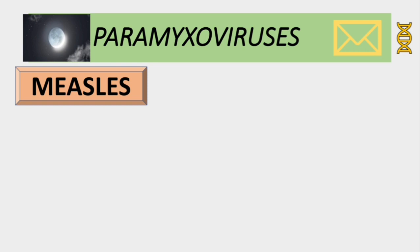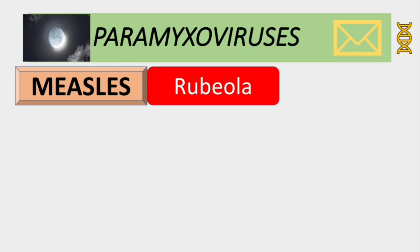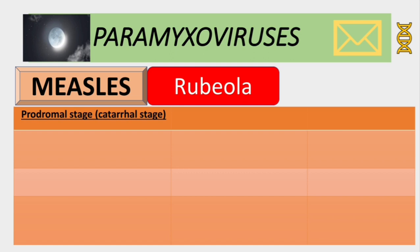Measles also goes by the name rubeola — don't confuse this with rubella and roseola, which are completely different viruses. Measles has three stages. The first stage is called the prodromal stage, characterized by three C's: cough, coryza, and conjunctivitis, and also high fever above 40 degrees Celsius.